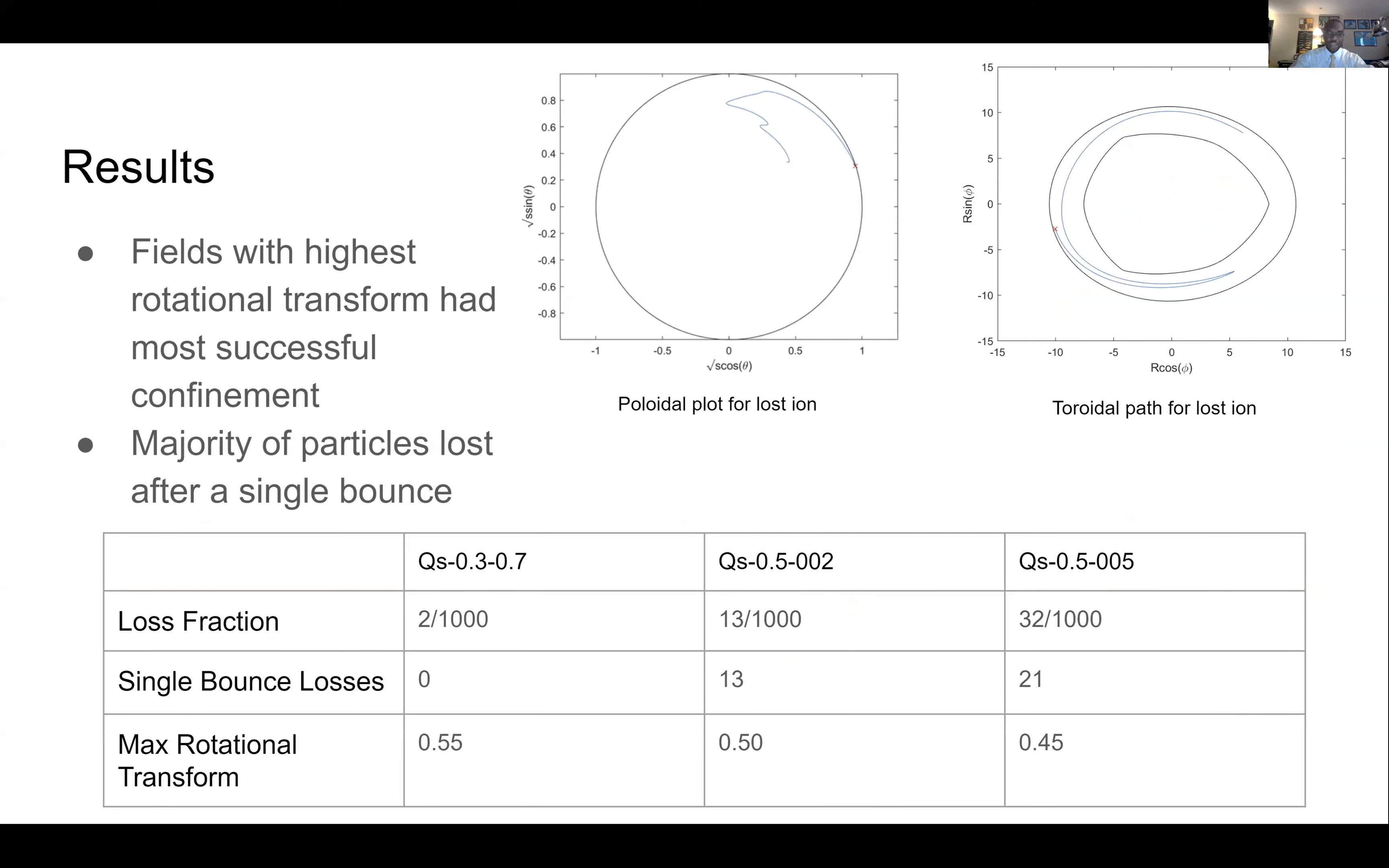So what we ended up finding was that each of these fields had very good confinement. The worst confinement percentage was 96.8%. But the most peculiar thing that we found was while there were no ripple trapped ions in any of these simulations, the majority of the ions in our worst performing reactors were lost after a single bounce. So despite not having any ripple trapped trajectories, we still had a ton of quick losses, a lot of damage to the reactor wall.